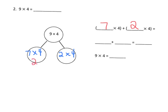I know that seven times four is 28 and two times four is eight so that's going to look like 28 and eight. If I add those together I get 36 and sure enough nine times four is 36.